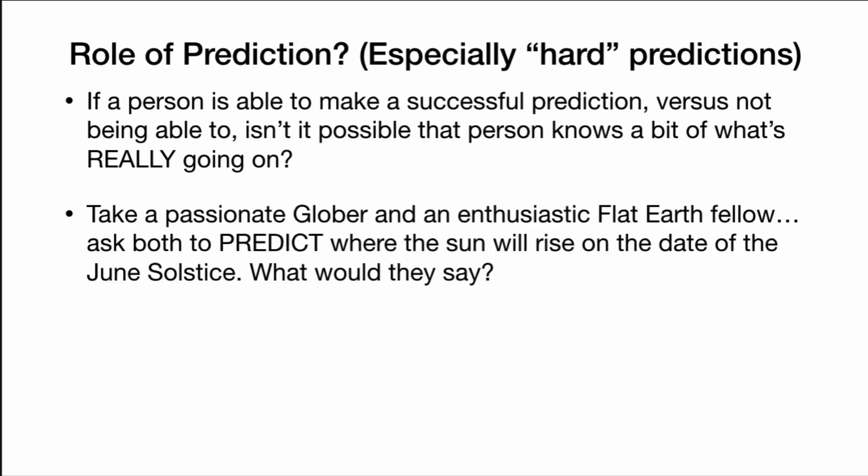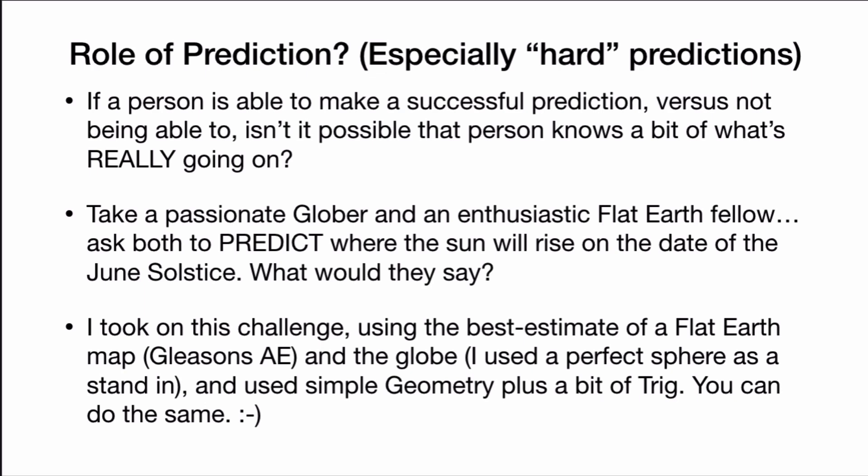So let's take a passionate Glober and a passionate flat Earth fellow, and ask them both to predict where the sun will rise — the azimuth of sunrise on the date of the June solstice. I took on this challenge. I used the best estimate of a flat Earth map, which is Gleason's AE. I know some people say that's not the real map, but you're welcome to do this geometric analysis using whatever map you want. I used Gleason's AE because it's popular — it's used by 99% of flat Earth folks. I also used a perfect sphere to stand in for the globe.